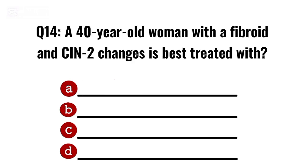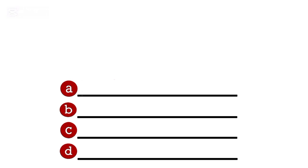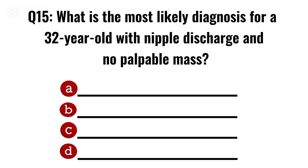Question 14. A 40-year-old woman with a fibroid and CIN2 changes is best treated with? Correct option A: Hysterectomy.